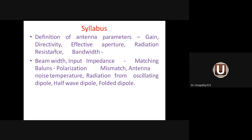The relation between gain and directivity is G = K × D, where G is gain, K is antenna efficiency factor, and D is directivity. Gain will be less than directivity because directivity is the ideal value — if 100% energy is given, 100% is delivered — whereas gain is the practical value.